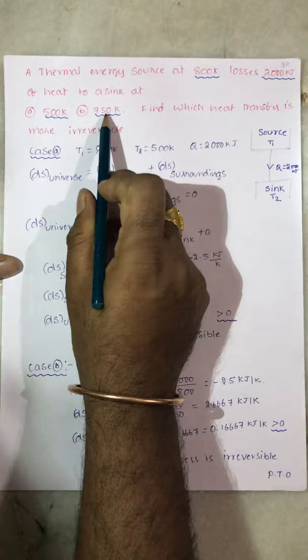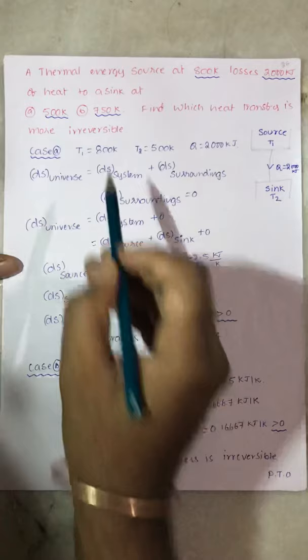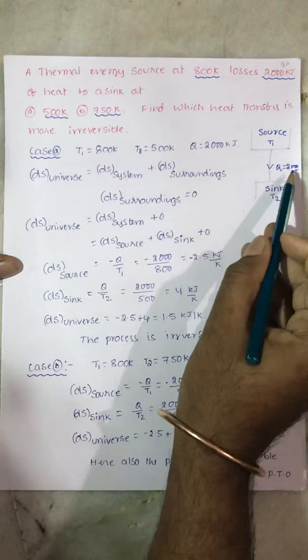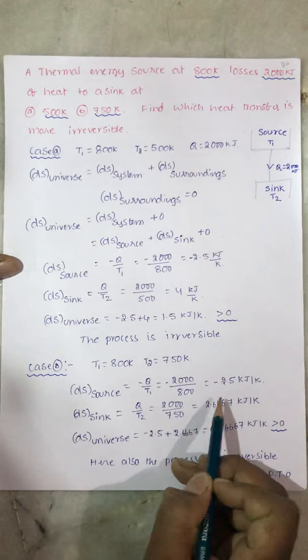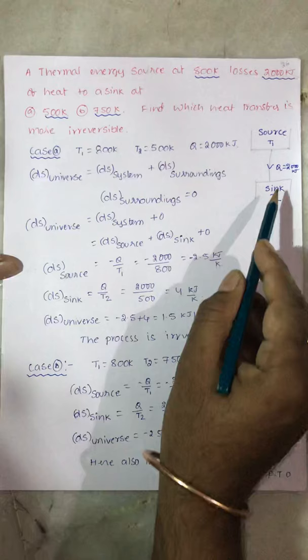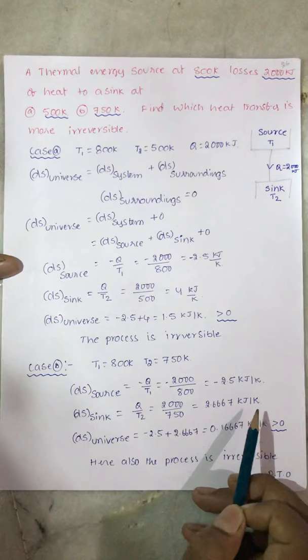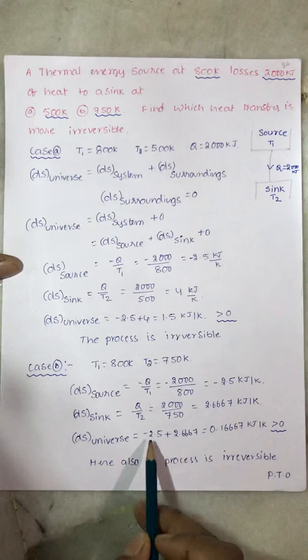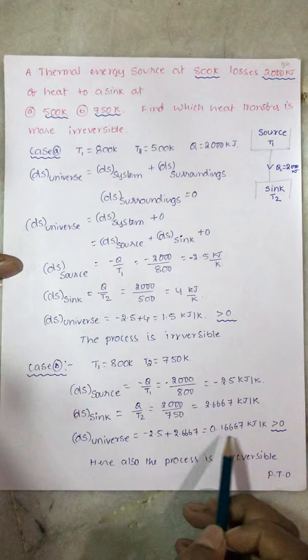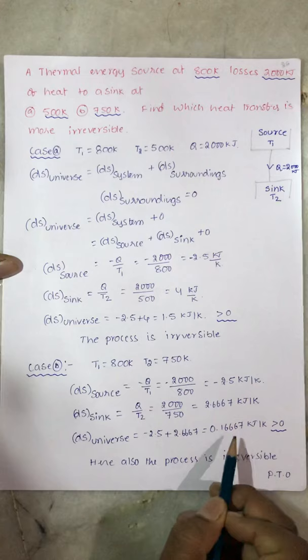For Case B, consider the second reservoir temperature as 750K. T1 remains 800K, T2 is 750K. DS of source equals minus 2000 by 800, which is minus 2.5 kJ per Kelvin — same as before. DS of sink equals 2000 by 750, which gives 2.667 kJ per Kelvin. DS of universe equals minus 2.5 plus 2.667, which is 0.1667 kJ per Kelvin. This process is also irreversible since it is greater than zero.